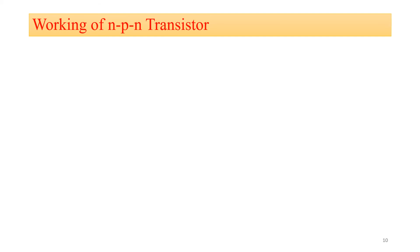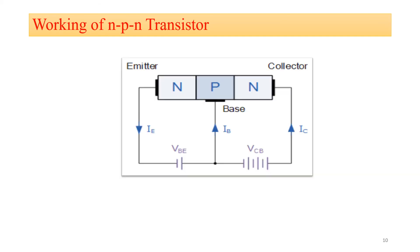Now let's see the working of the NPN transistor. The NPN transistor is connected in the active region. For active region, the base-emitter junction should be in forward bias while the collector-base junction should be in reverse bias. VBE is the voltage between base and emitter, and VCB is the voltage between collector and base — these are the external applied voltages used to bias the transistor in active region. The negative terminal of VBE is connected to the N-type emitter and the positive terminal to the P-type base, putting the base-emitter junction in forward bias.